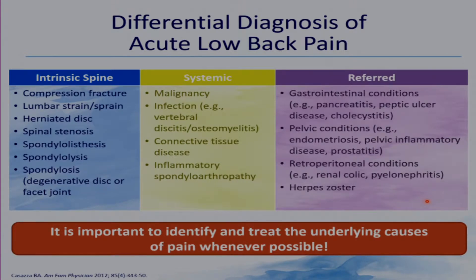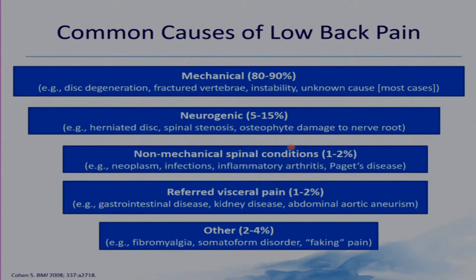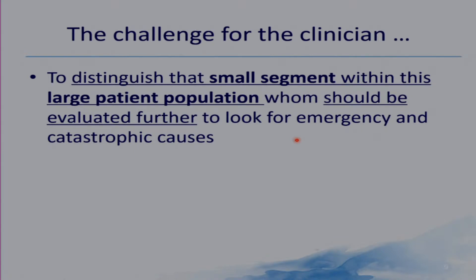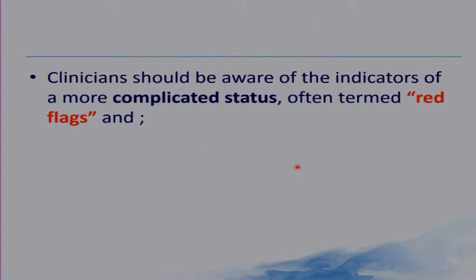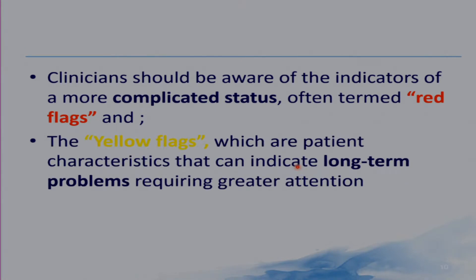The differential diagnosis of acute low back pain could be intrinsic to the spine, systemic, or referred. Common causes of low back pain are mostly mechanical. The challenge for the clinician is to distinguish that small segment within the large patient population who should be evaluated further to look for emergency and catastrophic causes. Clinicians should be aware of the indicators of a more complicated status, often termed red flags, and yellow flags, which are patient characteristics that can indicate long-term problems requiring greater attention.